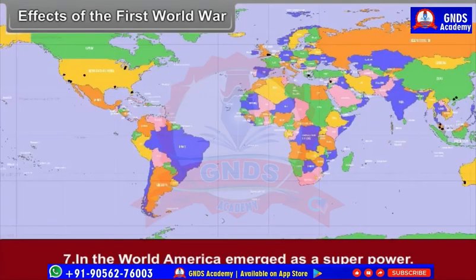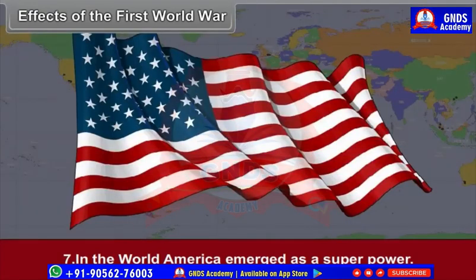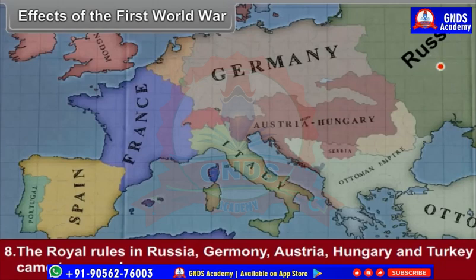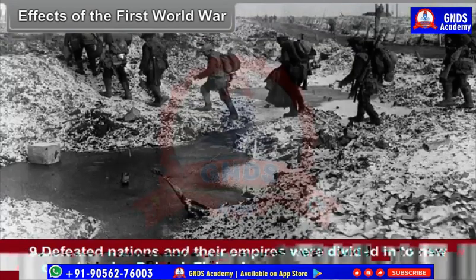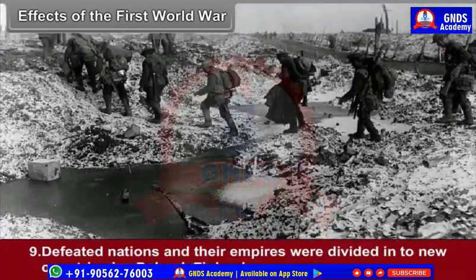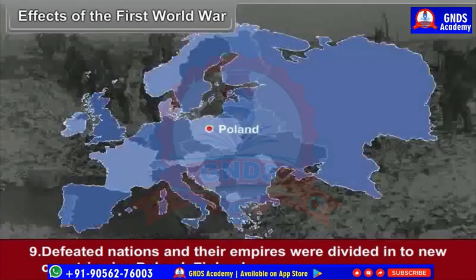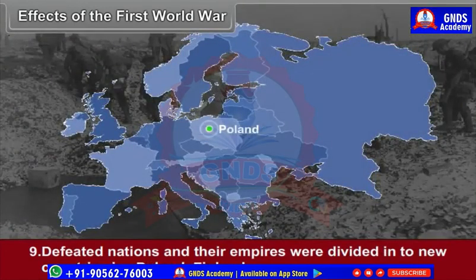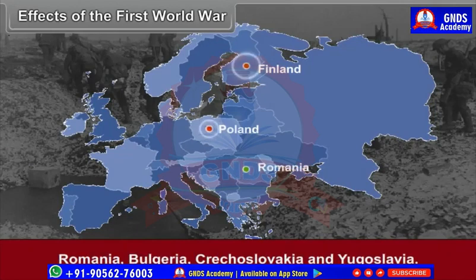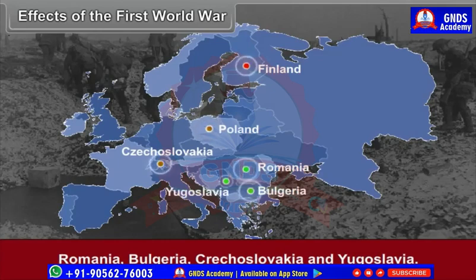Seventh, in the World War, America emerged as a superpower. Eighth, the royal rules in Russia, Germany, Austria, Hungary, and Turkey came to an end. Ninth, defeated nations and their empires were divided into new countries — namely Poland, Finland, Romania, Bulgaria, Czechoslovakia, and Yugoslavia.